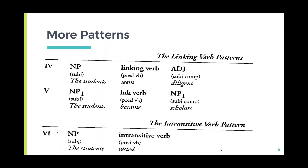The fourth and fifth patterns both have linking verbs as the main verbs. In pattern four, there is a noun phrase as subject, a linking verb as predicating verb, and an adjective functioning as subject complement. Example: 'The students seem diligent.' In pattern five, we have noun phrase one as subject, a linking verb as predicating verb, and noun phrase two as subject complement. Example: 'The students became scholars.'